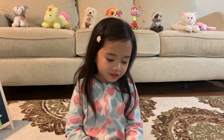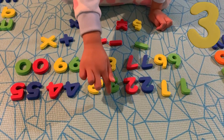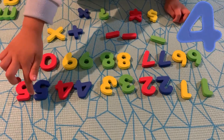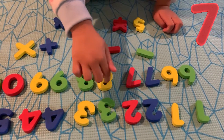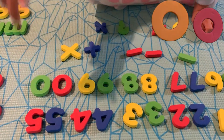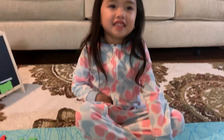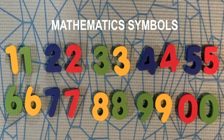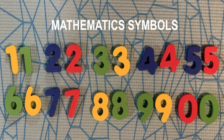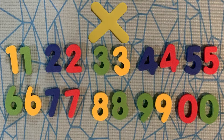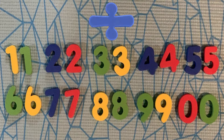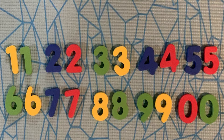Now let's read the numbers. One, two, three, four, five, six, seven, eight, nine, zero. We also have mathematical symbols such as plus sign, subtraction sign, multiplication sign, division sign, equal sign, dollar sign, yen sign, and a question mark.